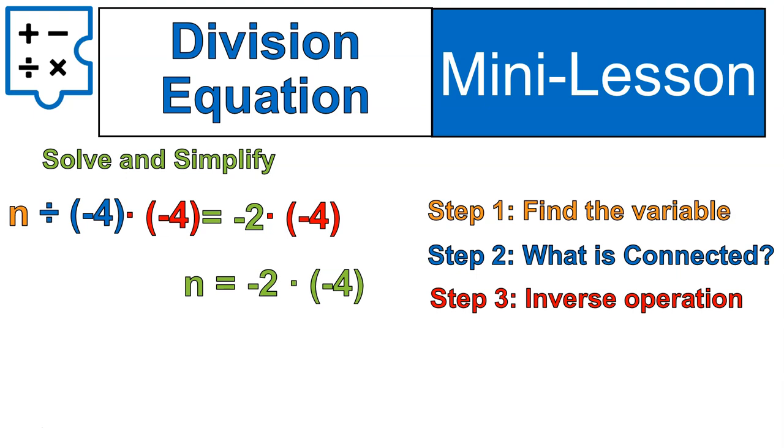And negative 2 times negative 4 over there on the right side of the equal sign. We solve that. 2 times 4 is 8. Negative times negative gives us a positive. Boom! There it is. Not too bad.